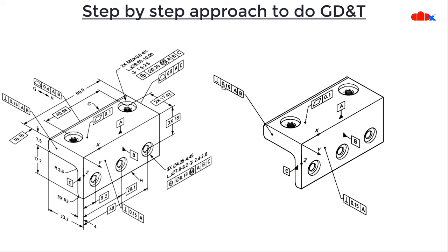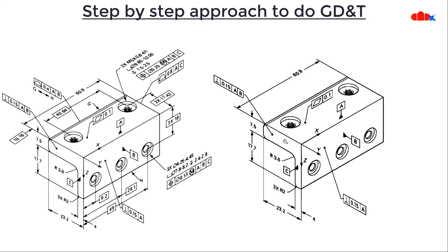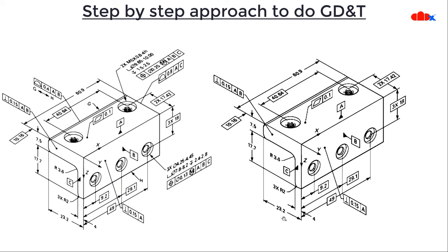Then I go to the next surface and apply perpendicularity with reference to both datum A and datum B — meaning this surface must be 90 degrees relative to both surfaces, with deviation within 0.15. Once the GD&T for datums is decided, you go to dimensioning. These dimensions will have general tolerancing mentioned somewhere in the drawing, perhaps in the title block or as a note.